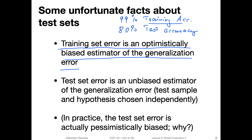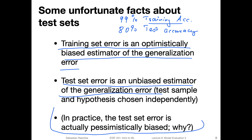The second point is that the test set error is an unbiased estimator of the generalization error, given that we only use the test set once and don't use it for choosing the model. However, the unfortunate fact is that in practice the test set error is actually pessimistically biased. Why could the test set error be pessimistically biased? It's not very obvious - it has something to do with resampling and the data set we work with. I'll let you think about it before we start the next video.